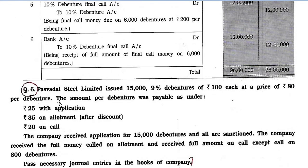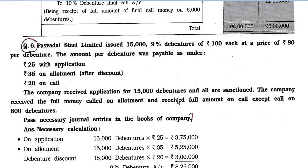Now, Question No. 6. Paswadal St. Ltd. issued 15,000 9% debentures of Rs. 100 each at a price of Rs. 80 per debenture (i.e., at a discount). The amount per debenture was payable as: Rs. 25 with application, Rs. 35 on allotment after discount, Rs. 20 on call. The company received applications for 15,000 debentures and all were sanctioned. The company received the full money on allotment but received the full amount on call except on 800 debentures. Pass necessary journal entries.